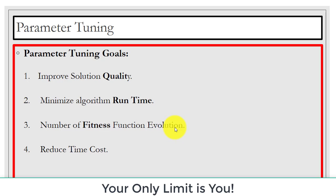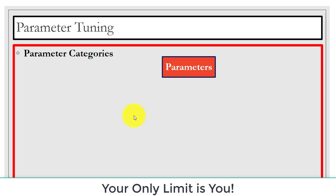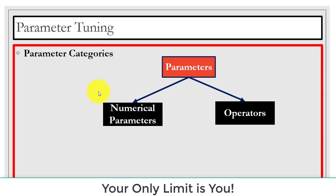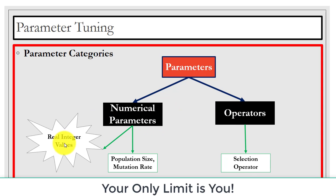The goals of parameter tuning are: reducing time cost, minimizing algorithm running time, improving solution quality, and reducing the number of fitness function evaluations. The categories of parameters include numerical parameters — such as real and integer values, for example population size and mutation rate — and operators, such as the selection operator used in evolutionary algorithms.